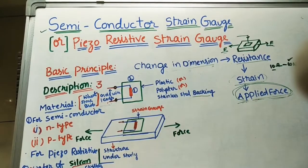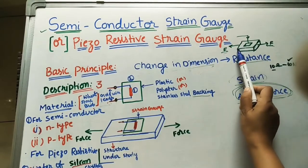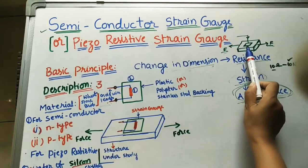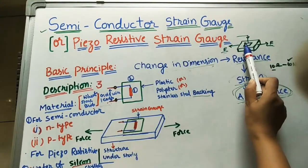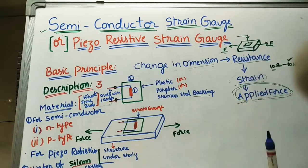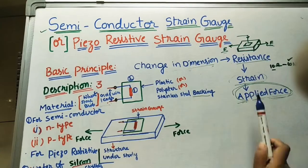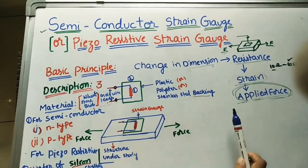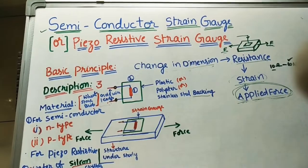These gauges are called bounded type strain gauges. They are bounded type because, whatever structure we are taking, we paste the strain gauge on the surface of that structure with the help of adhesive, for finding the applied forces. That is why these are called bounded type strain gauges.